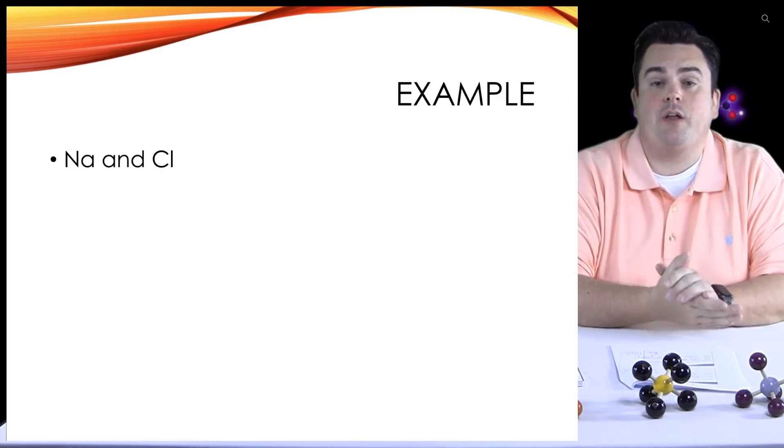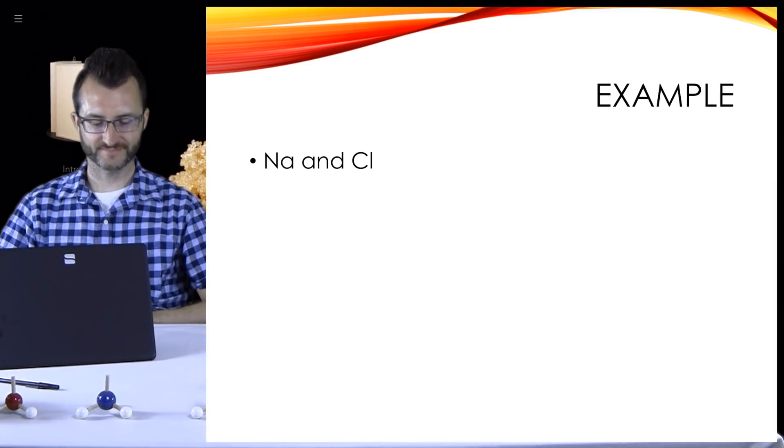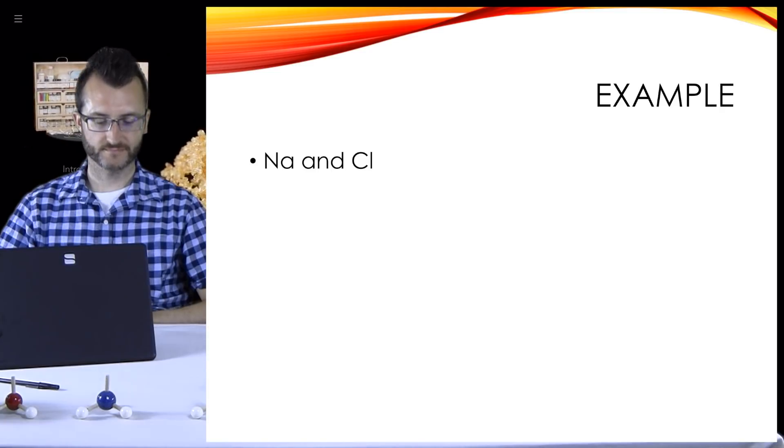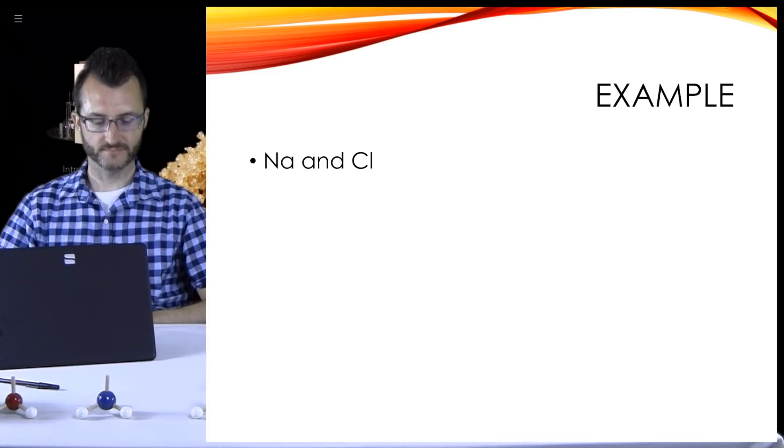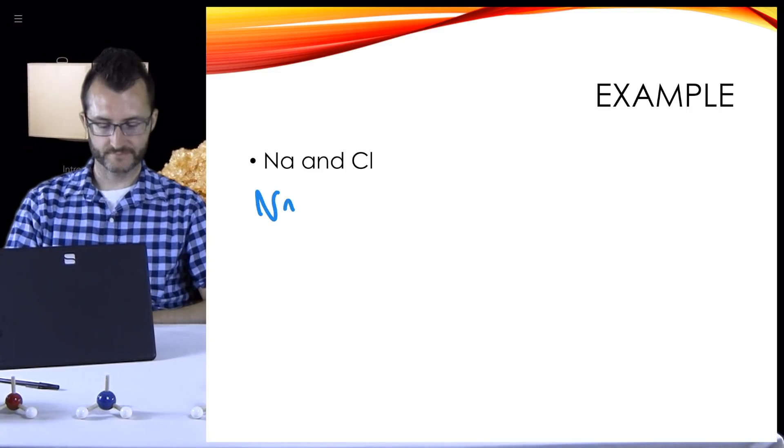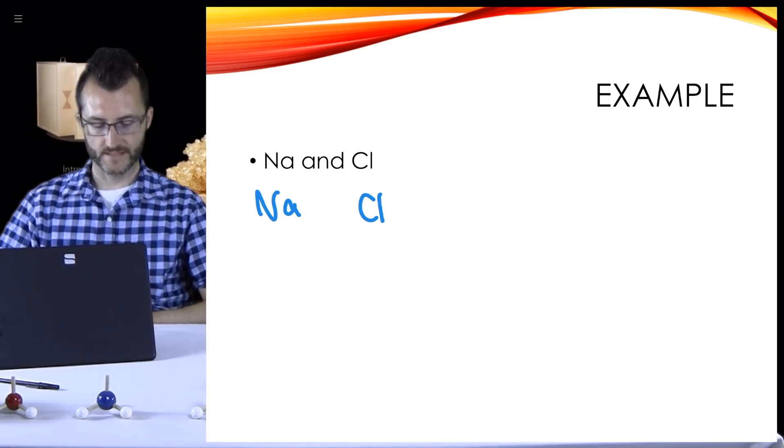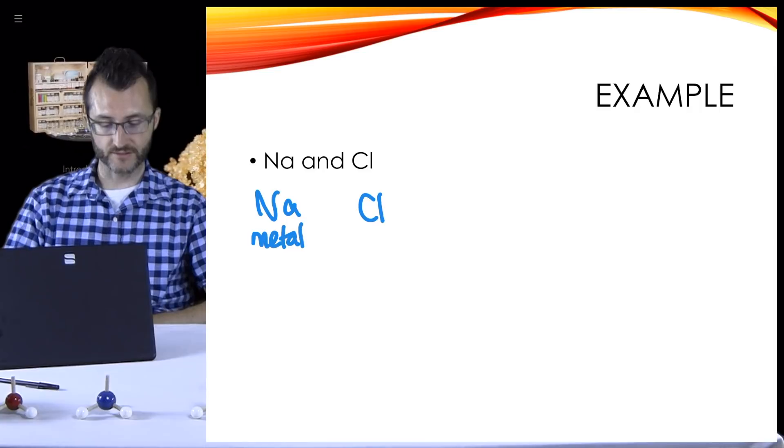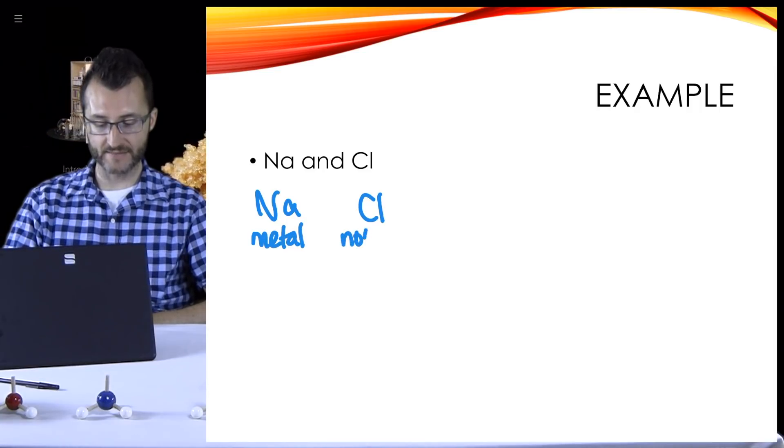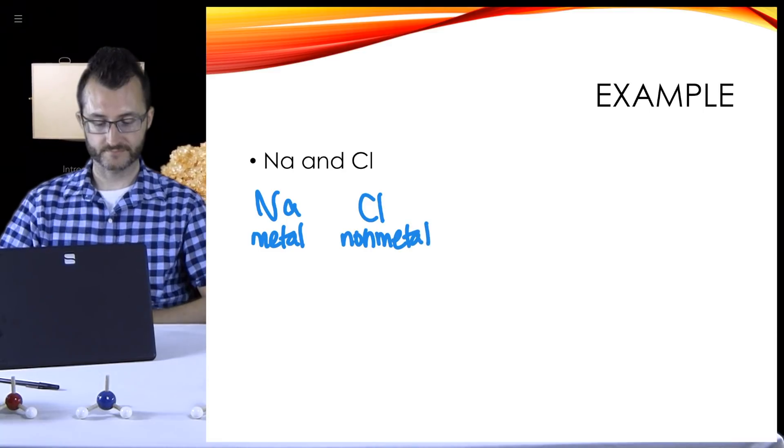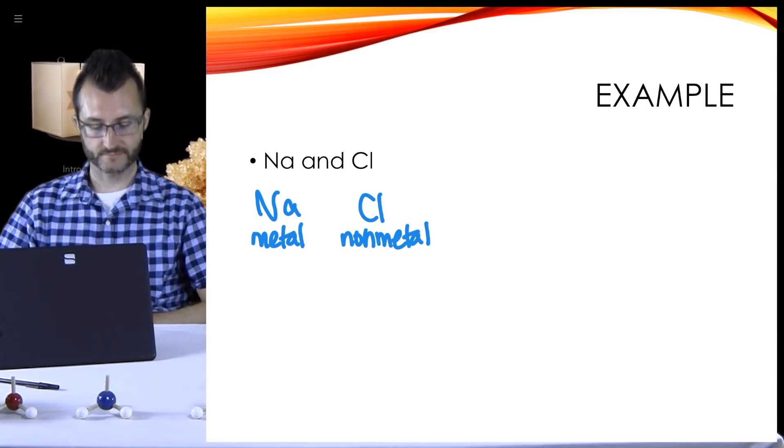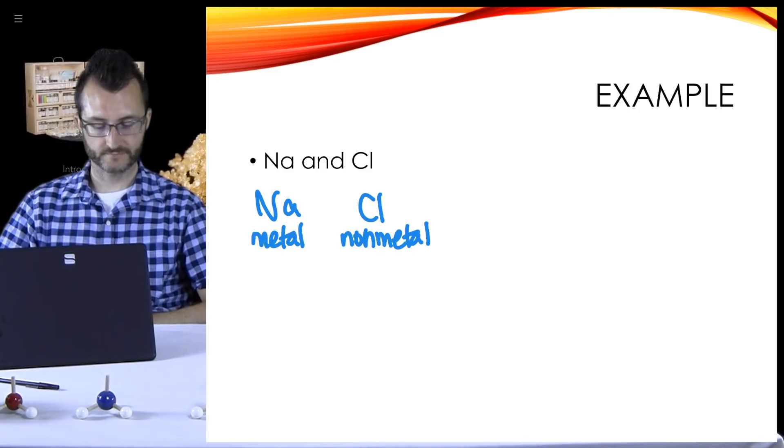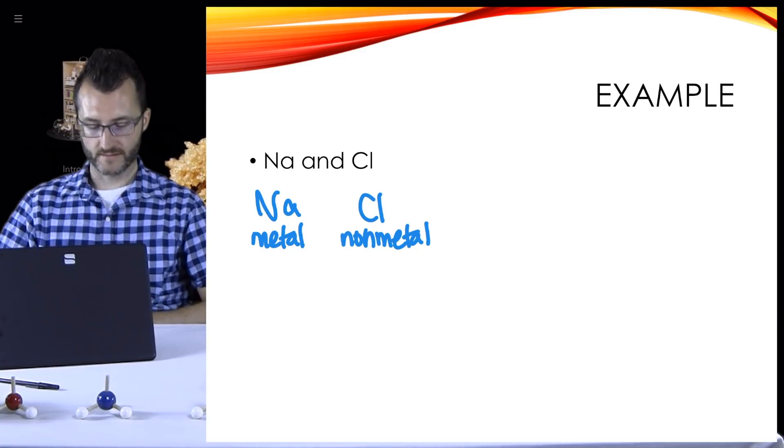All right, ladies and gentlemen, we're going to do an example here. We've got Na and Cl. One of the first and most important things to do in drawing these is to figure out what type of bond we have. So we have Na and Cl. What type of elements are Na and Cl?